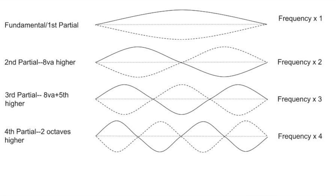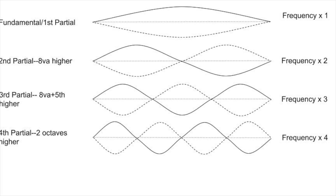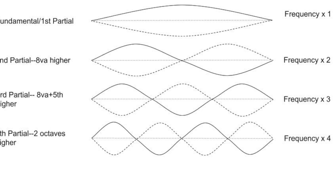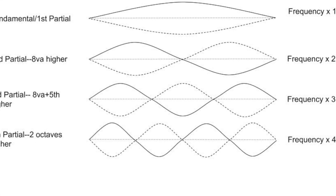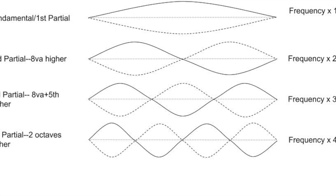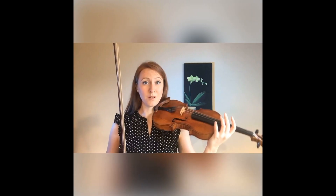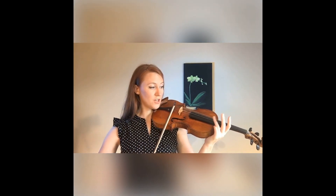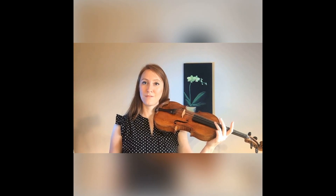In the second partial, you see that the string is vibrating in halves, and this is an octave above the fundamental. In the very middle of that string, there's a spot that doesn't move, and it's called a node. So if you wanted to just hear this partial, all you have to do is place your finger very lightly at that node. And there you have your second partial.